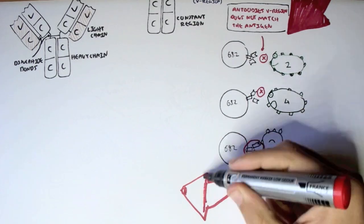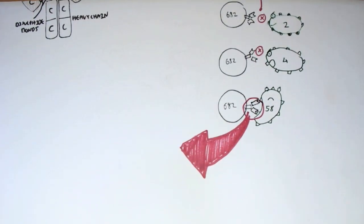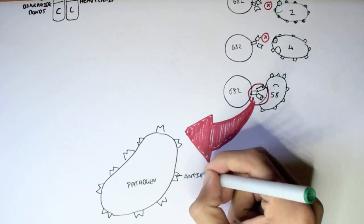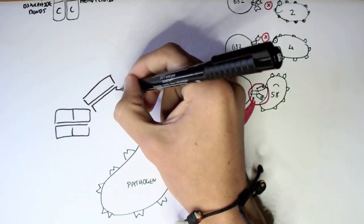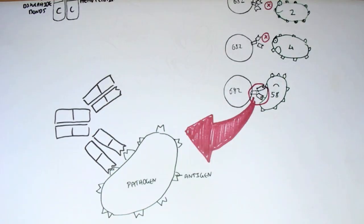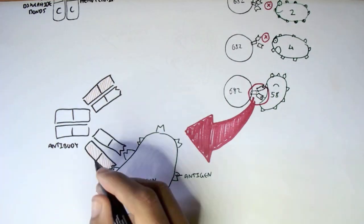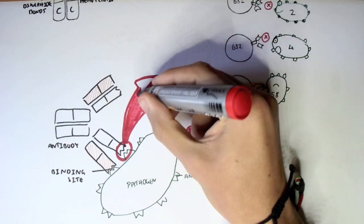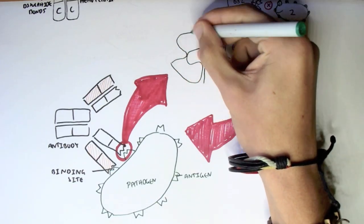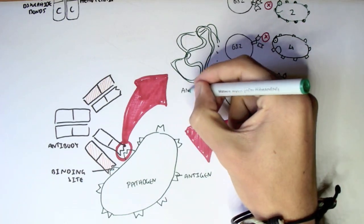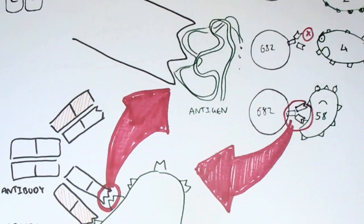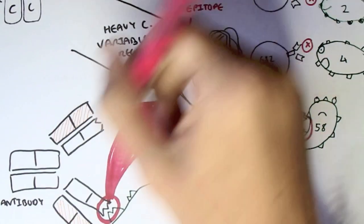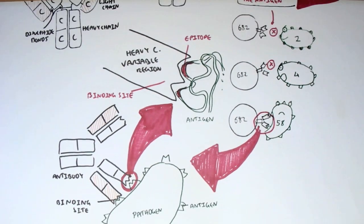This illustrates that antibodies are highly specific and bind to a specific type of antigen. Here we have a pathogen with its specific antigen, and the antibody consisting of a light chain and heavy chain — the top portions are the variable regions and the rest are constant regions. The variable region contains the binding site which latches onto the antigen of the pathogen. The site on the antigen that makes contact with the antibody's binding site is known as the epitope.